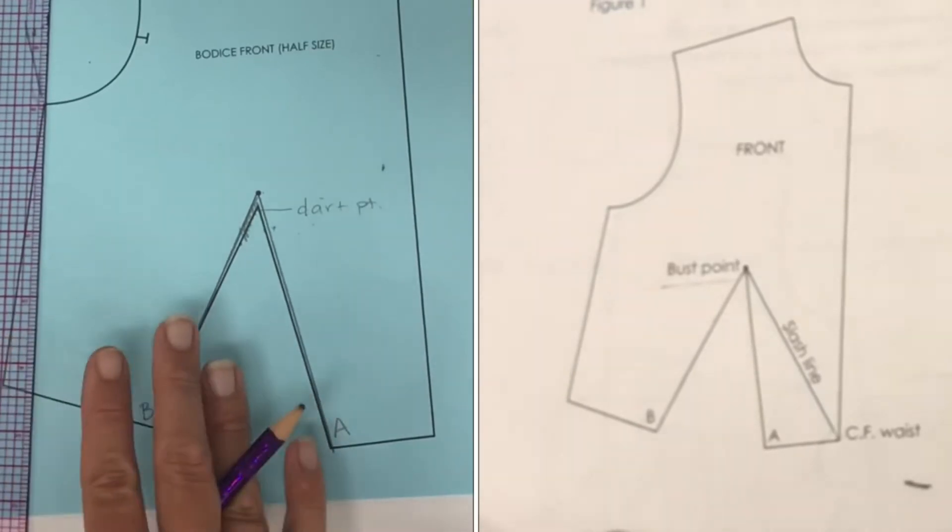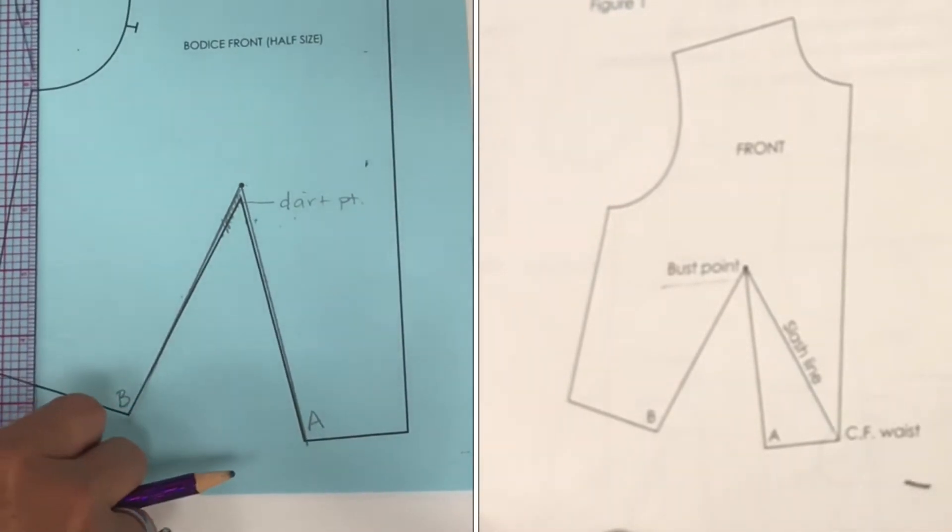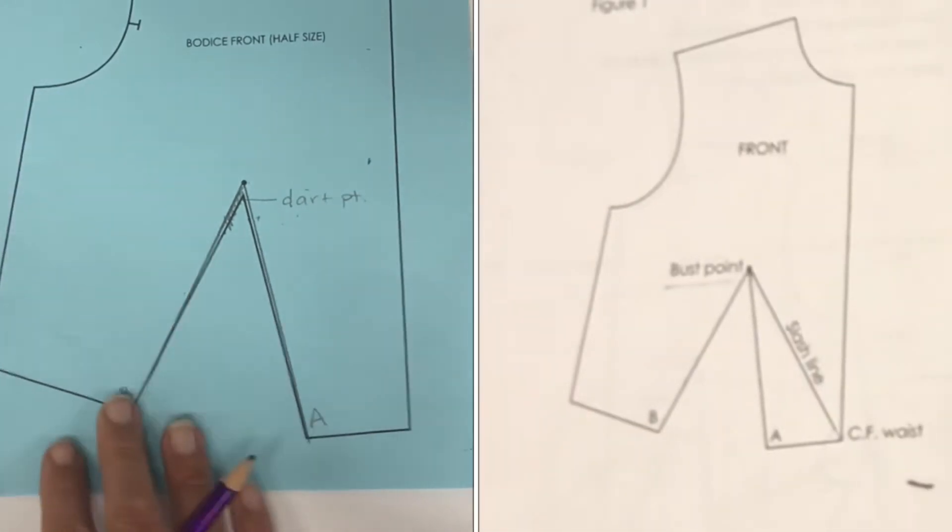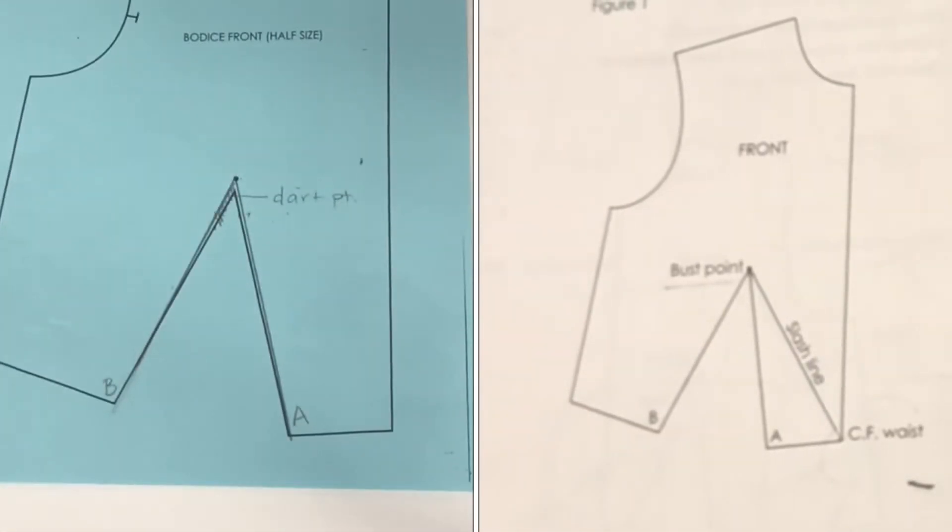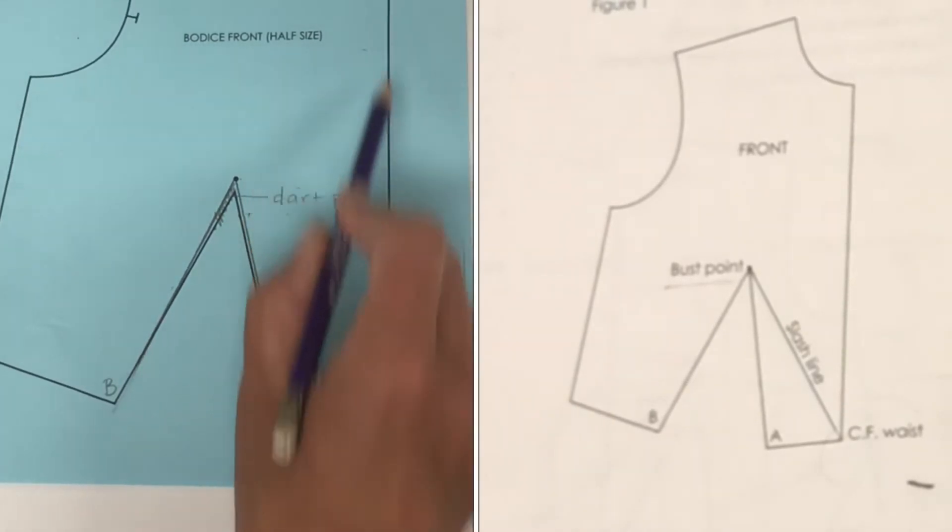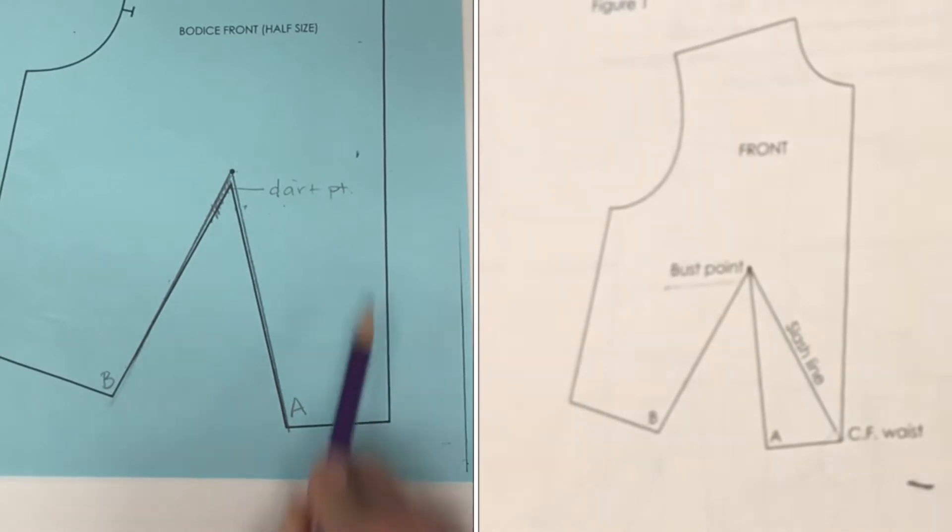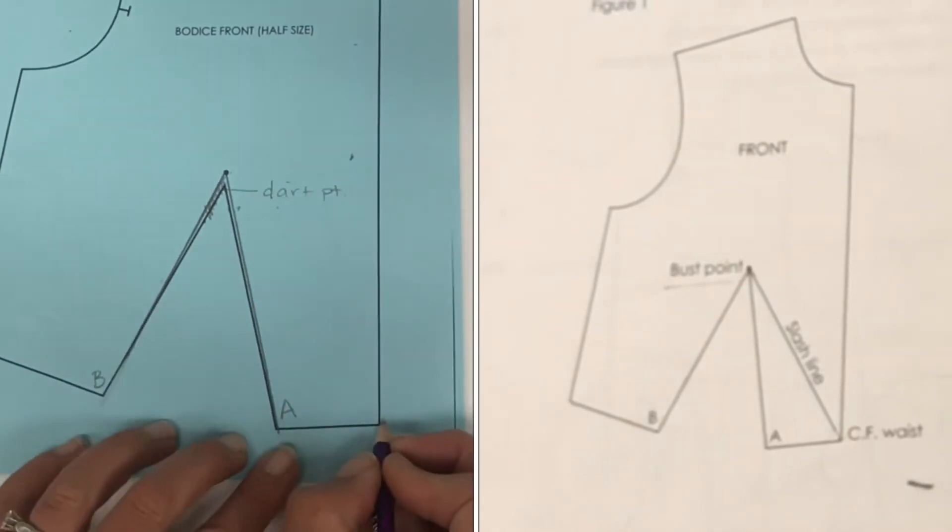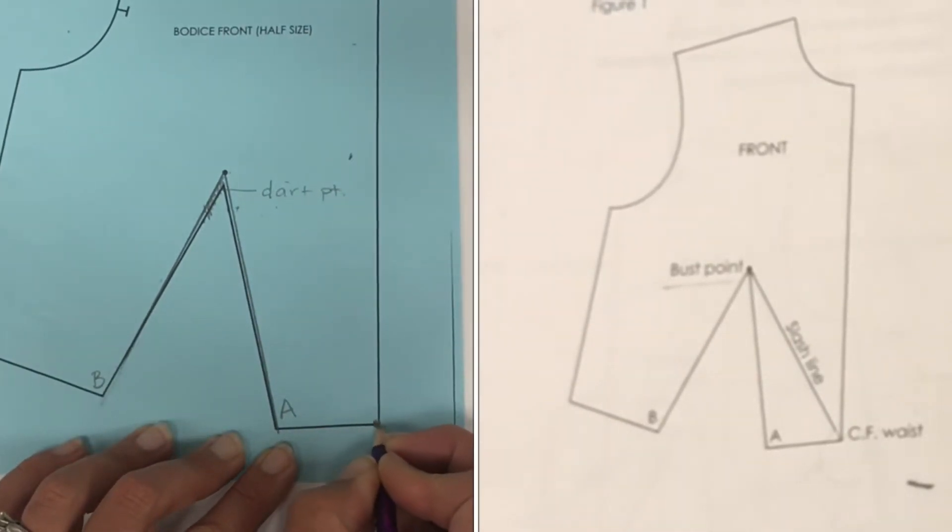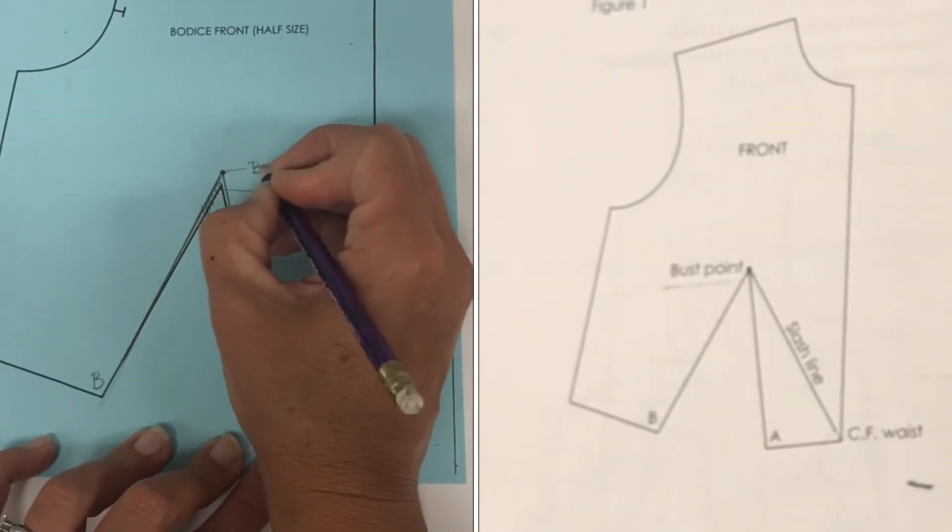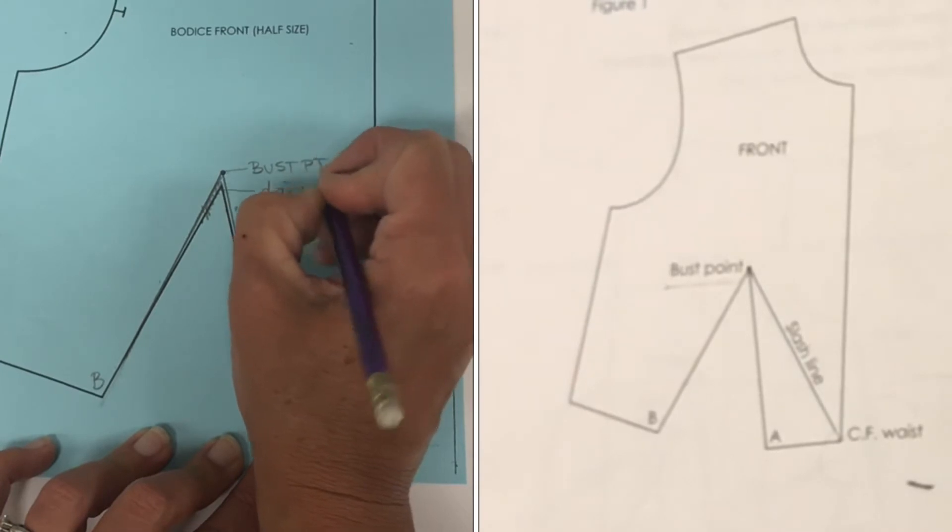Okay, so now we need to draw our slash line from our center front waist to our bust point. So where is the center front waist? This is our center front line. Down here is our waist. This is center front neck. So here's our center front waist. So we want to draw a slash line from this point to the bust point. Right here is the bust point.